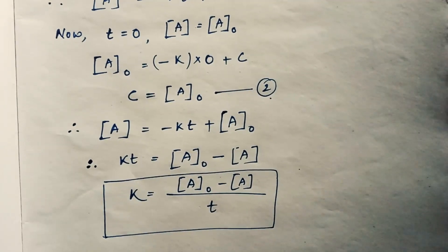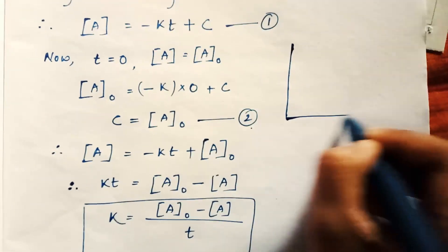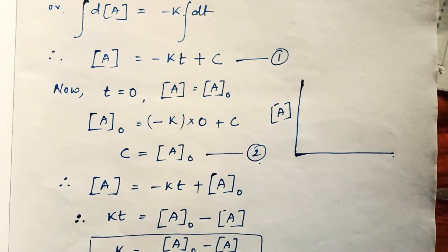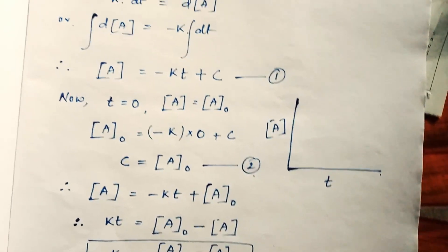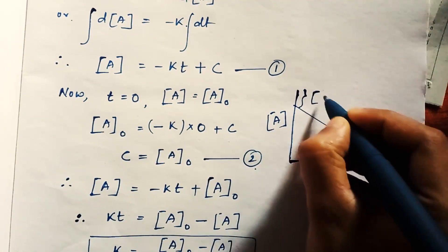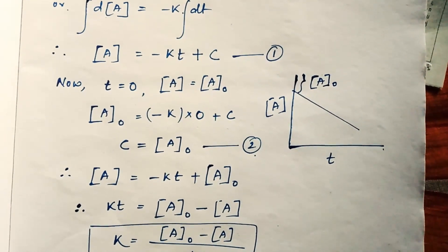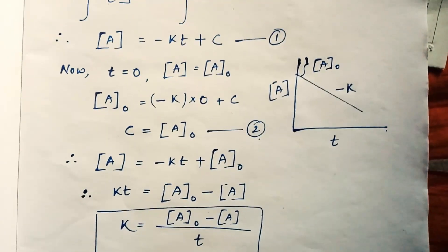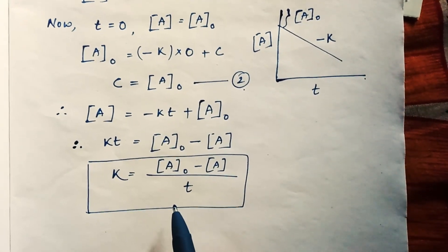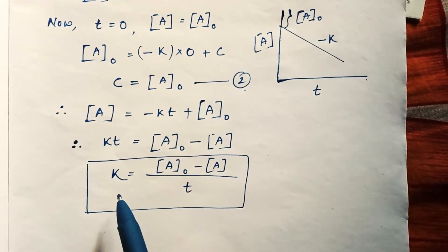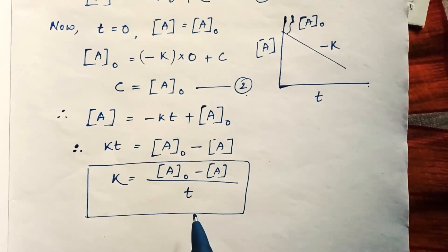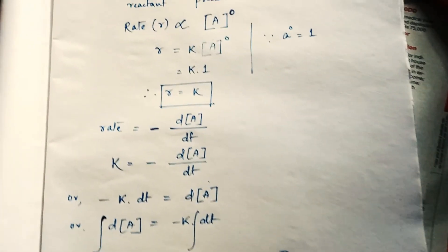If we plot a graph of the concentration of A versus time t, we get a straight line where the intercept is A₀ (the initial concentration) and the slope is -k. From this equation we can also see that the rate constant of the zero-order reaction depends on the concentration of the reactant and time. Thanks for watching this video.